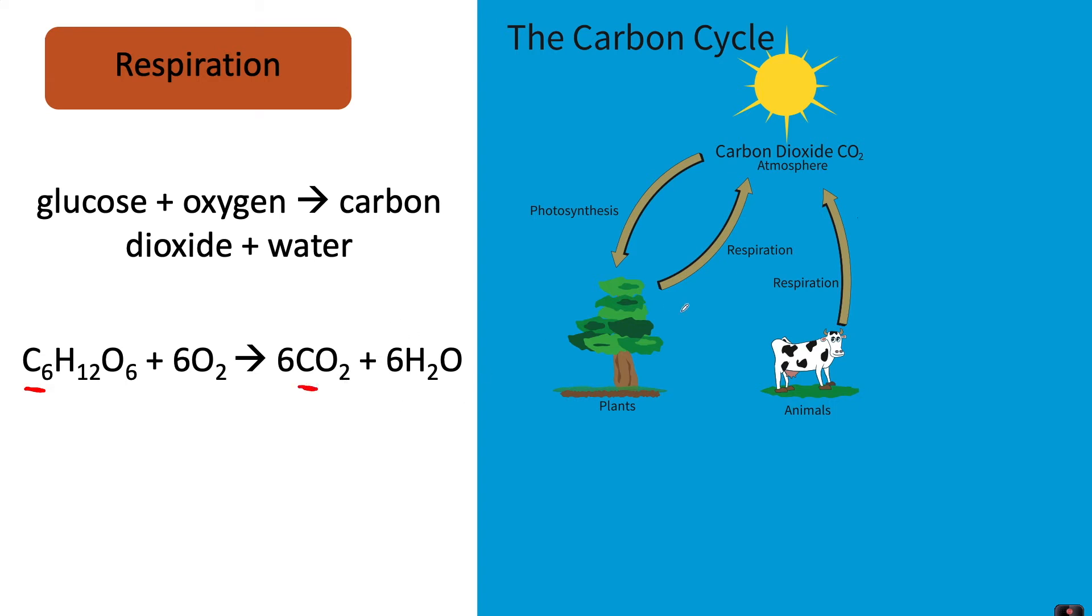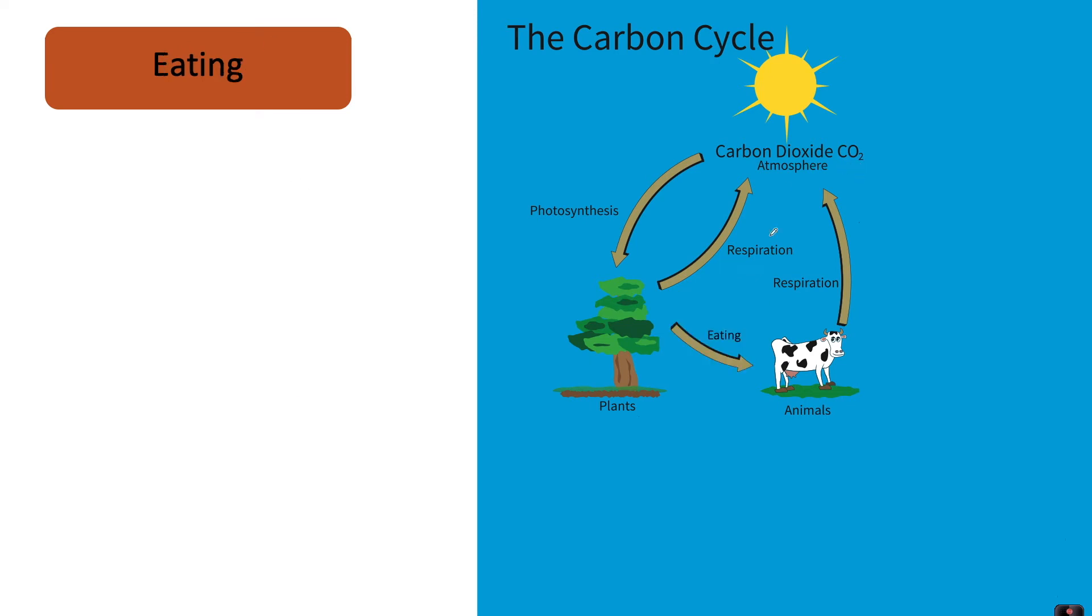Both animals and plants respire, taking glucose and turning it into carbon dioxide, which is one of the byproducts of respiration. How do animals get glucose in the first place? They get this by eating plants, taking in carbon compounds such as glucose or starch.